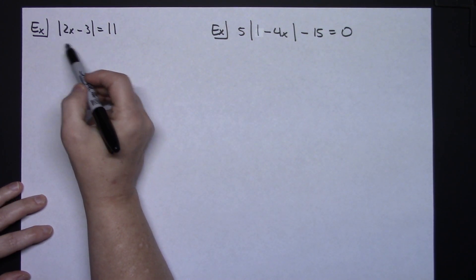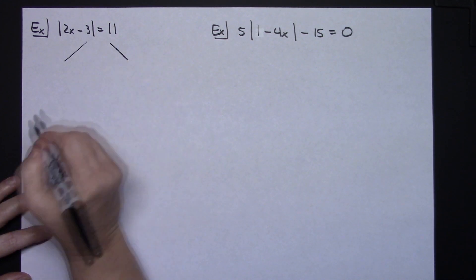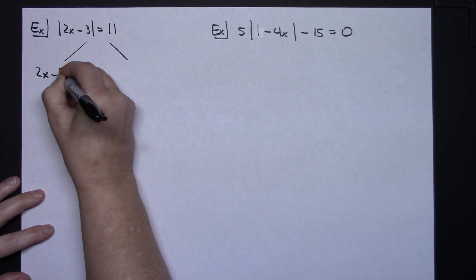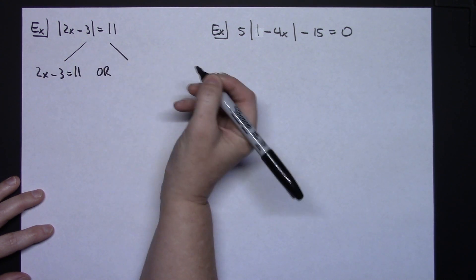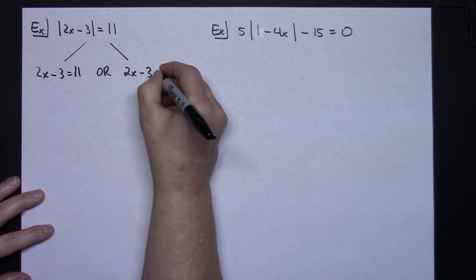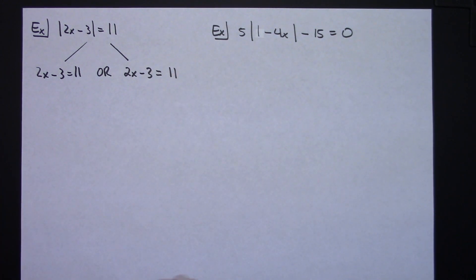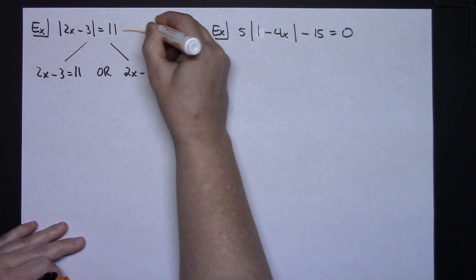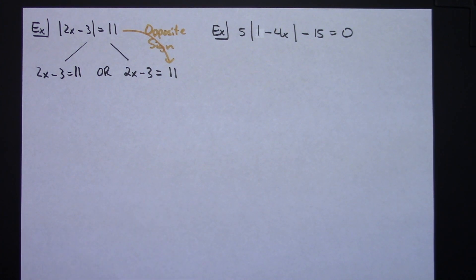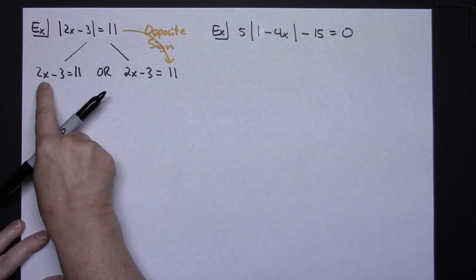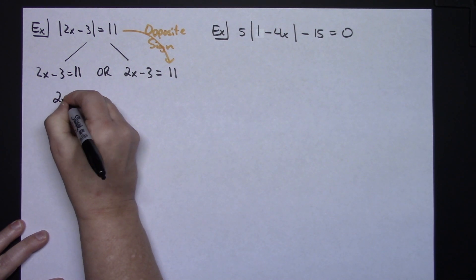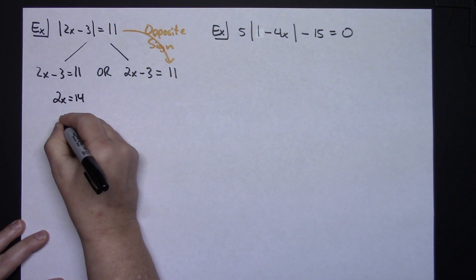Since the absolute value bars are isolated, I can immediately break it up into two equations. I'll write the first equation exactly as I see it without the absolute value bars: 2x minus 3 equals 11. I know it's going to be an OR, so I put OR down. Adding 3 to both sides gives 2x equals 14, and dividing both sides by 2 gives x equals 7.